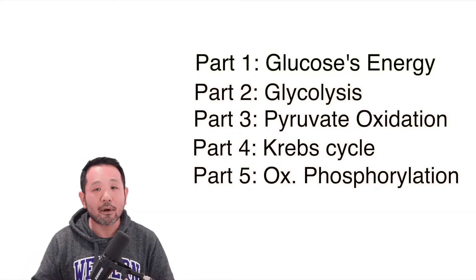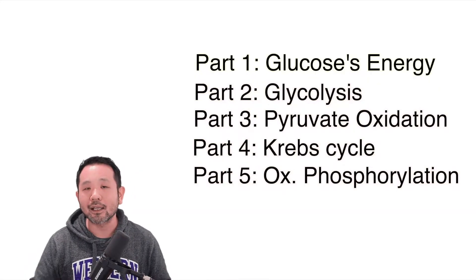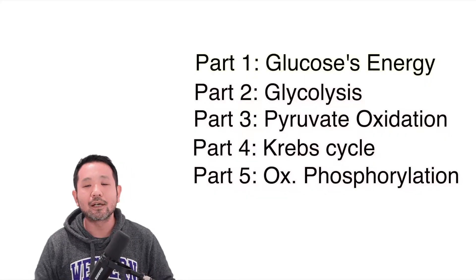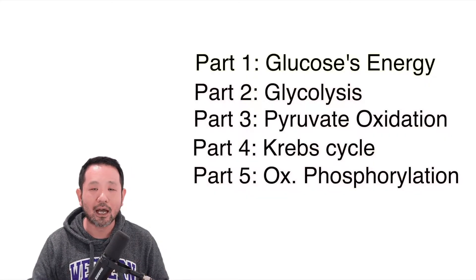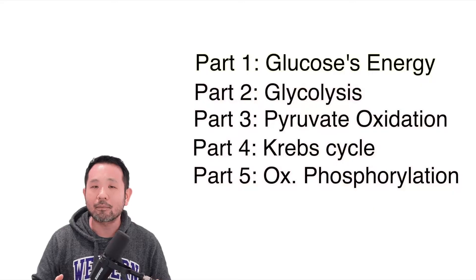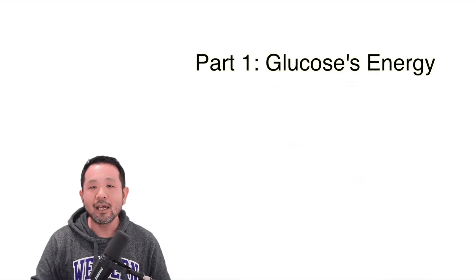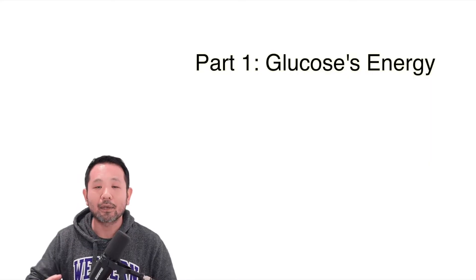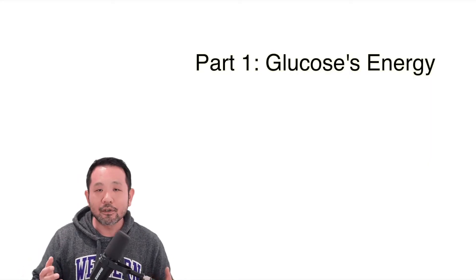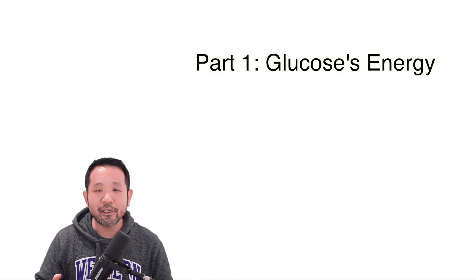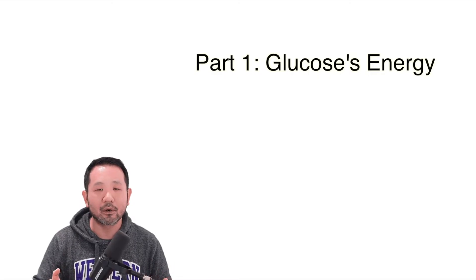The second, third, fourth, and fifth parts are going to deal with glycolysis, pyruvate oxidation, the Krebs cycle, as well as oxidative phosphorylation. I'm not going to talk about fermentation or anaerobic respiration today — that's probably going to be another video. But without further ado, let's begin talking about glucose and specifically looking at why we think of glucose as a highly energetic molecule.